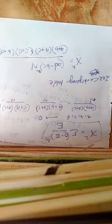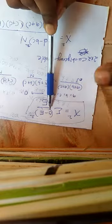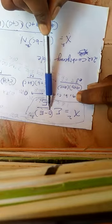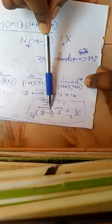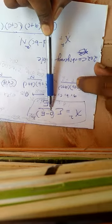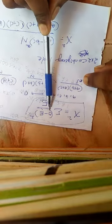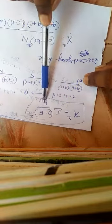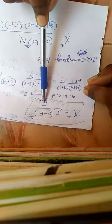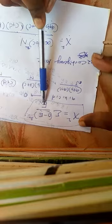This is coming from, you can substitute observed frequency. First observed frequency is a. Corresponding expected frequency is a plus b into a plus c divided by n. So you substitute in this formula a minus a plus b, a plus c divided by n.